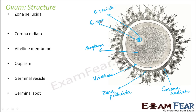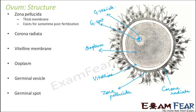Zona pellucida is a thick membrane that exists for some time post-fertilization. Once the fusion between the male and female gametes has taken place, a thick protective membrane forms outside the fertilized ovum. This zona pellucida layer acts as an outer protective layer, protecting the contents inside.